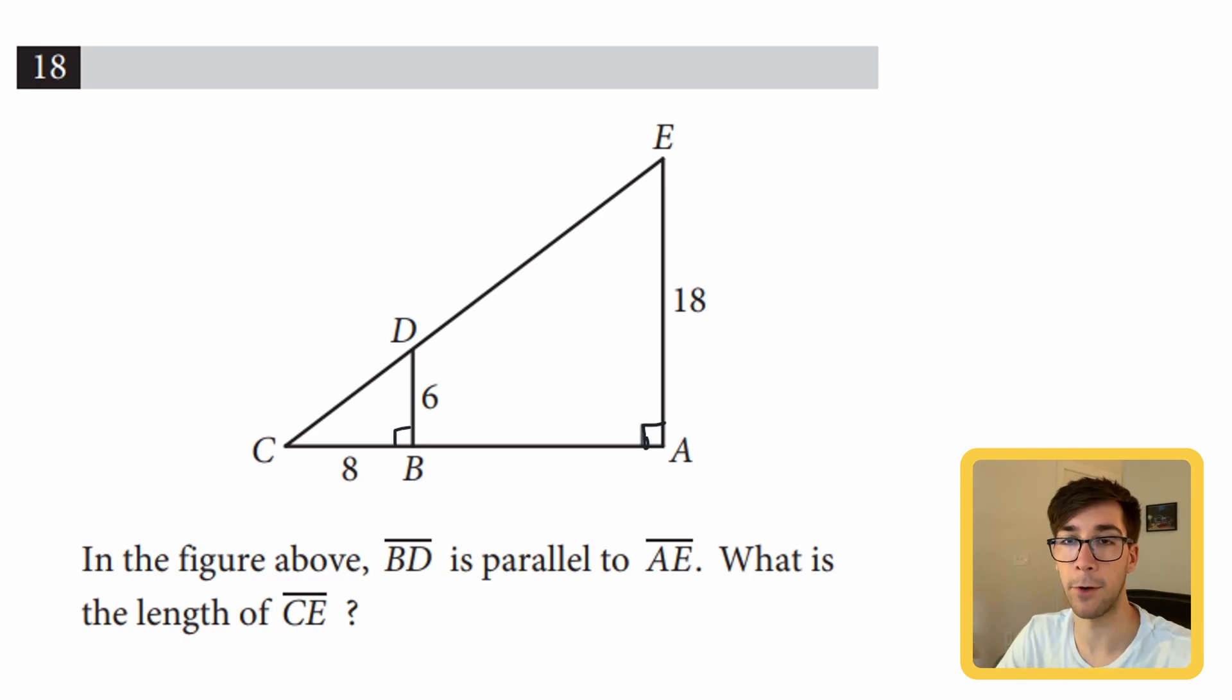In this case, we know that this angle here is shared by both of them—the big triangle has that blue angle and the little triangle has that blue angle. They also have these right angles. That's angle-angle similarity, so we know they're similar. In this problem, we're looking for CE, which is this big side here.